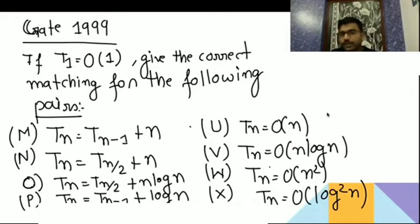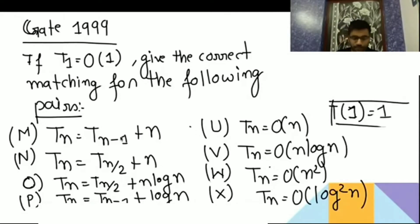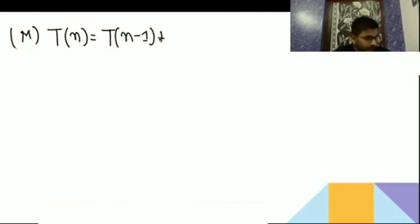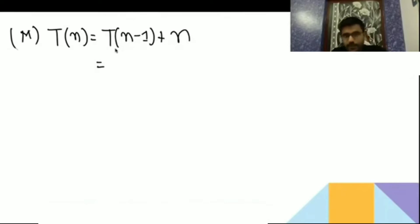T(1) is going to give 1. Now you have to solve these four recurrence equations and tell me which is going to be the answer. I will take them one by one. First, M: they have said T(n) = T(n-1) + n.